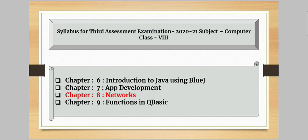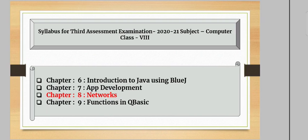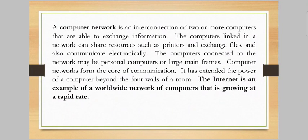First of all, we need to know what is a computer network. Mainly, a computer network is an interconnection of two or more computers that are able to exchange information. A computer network is mainly created to exchange information. Computers linked in a network can share resources such as printers and files, and they also communicate electronically.